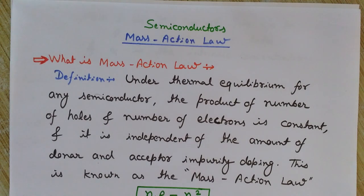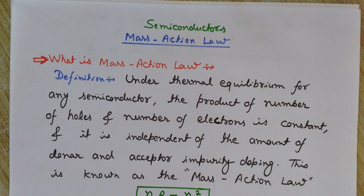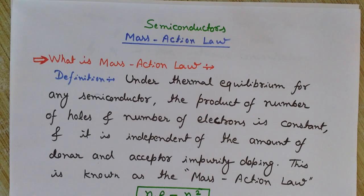If I have an intrinsic semiconductor — a pure form of semiconductor — and I dope it with n-type impurities, that is pentavalent impurities, then the number of electrons present in the conduction band will increase, while the number of holes in the valence band will decrease.